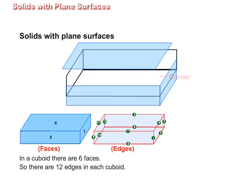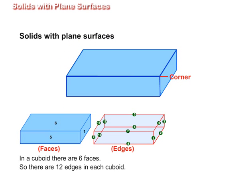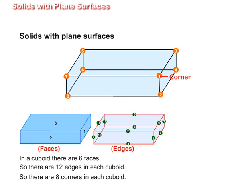The two edges of a cuboid meet at the corner. So, there are 8 corners in each cuboid.